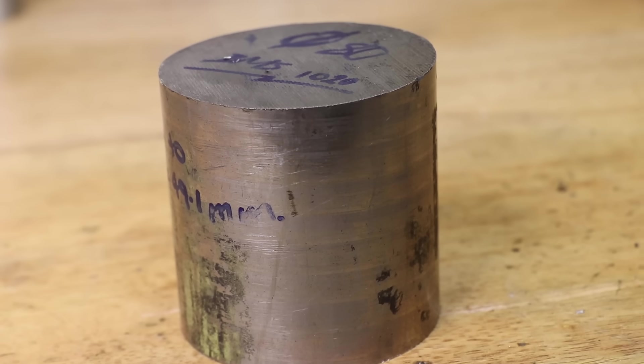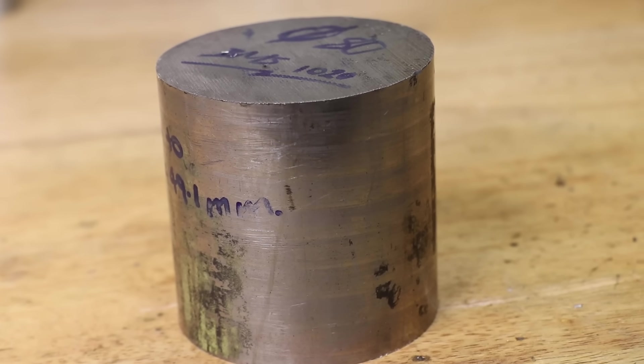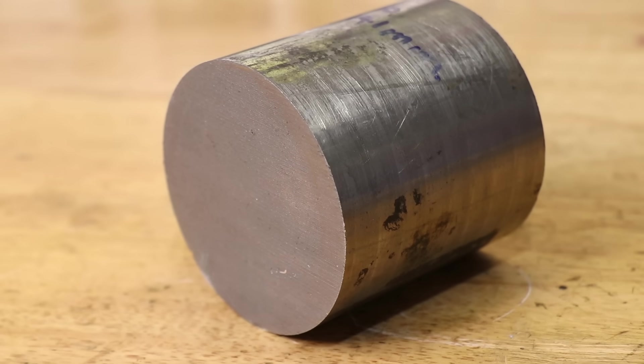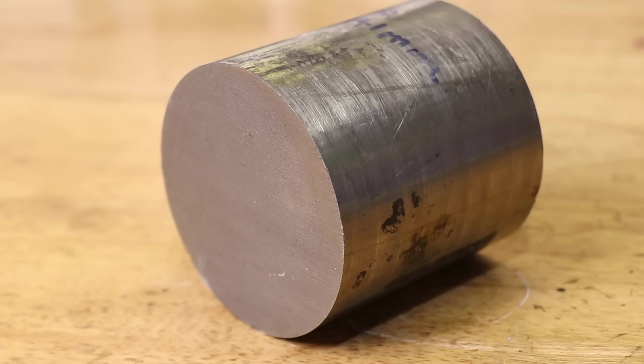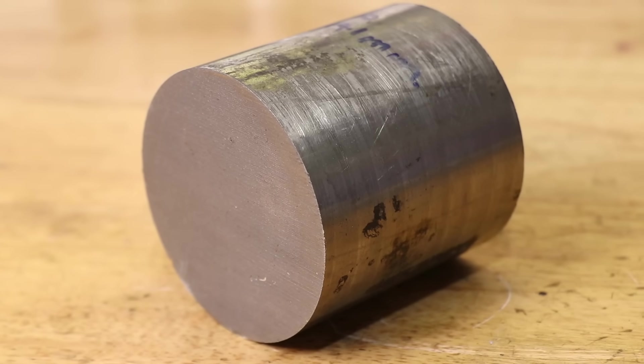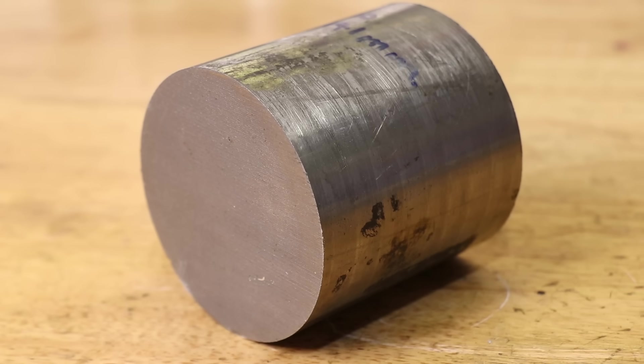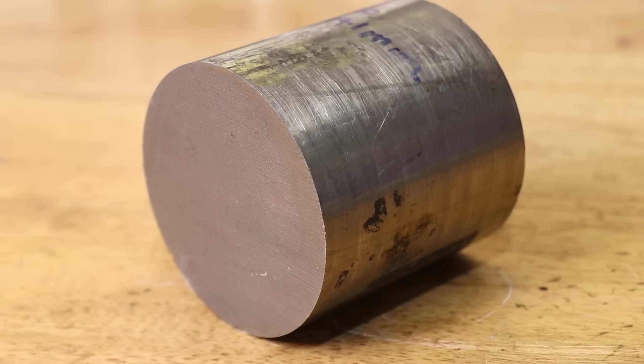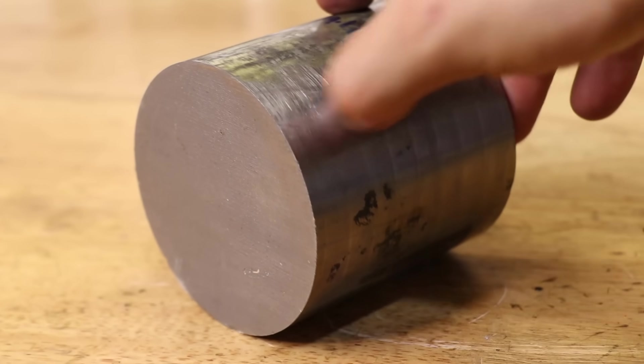On the other end of the spectrum, we have cold rolled. This is a bar of the same mild steel, 1020 grade, but it's been cold formed. I believe this one specifically has been cold drawn, and because of the forming process, the surface is a lot more cleaner and it's a lot more truer to shape than the hot rolled.